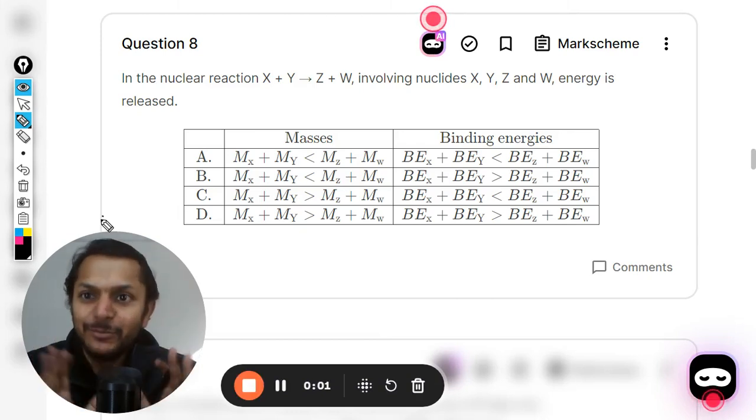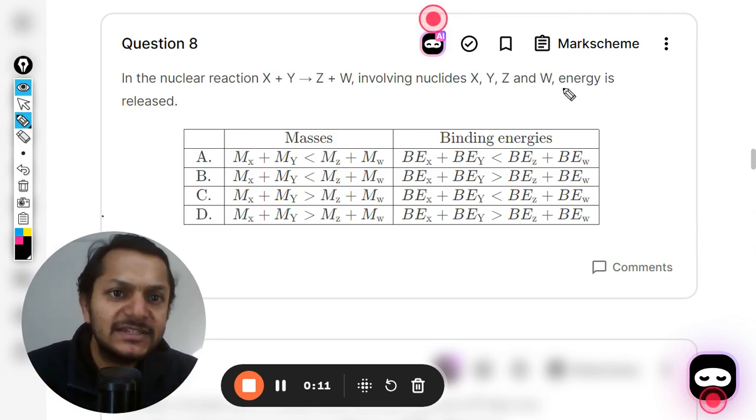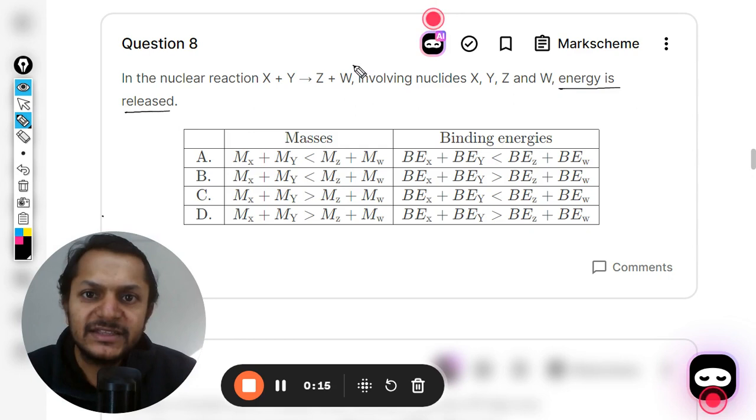Let us see what is there in this question. It's a very important question. In the nuclear reaction X plus Y gives Z plus W, involving the nuclides X, Y, Z, W, energy is released. Now this is a very important piece of information for us—energy is released in this reaction.